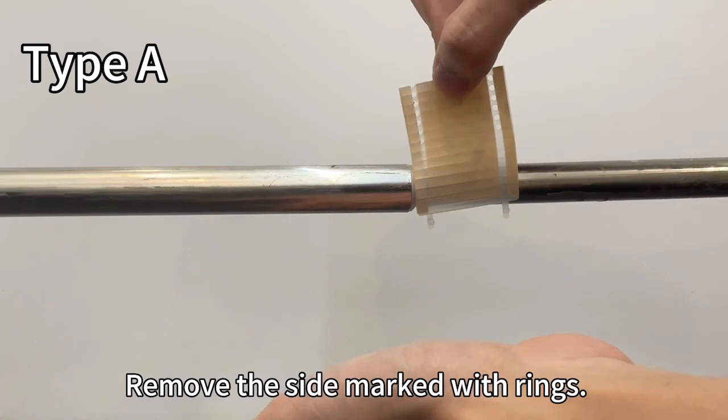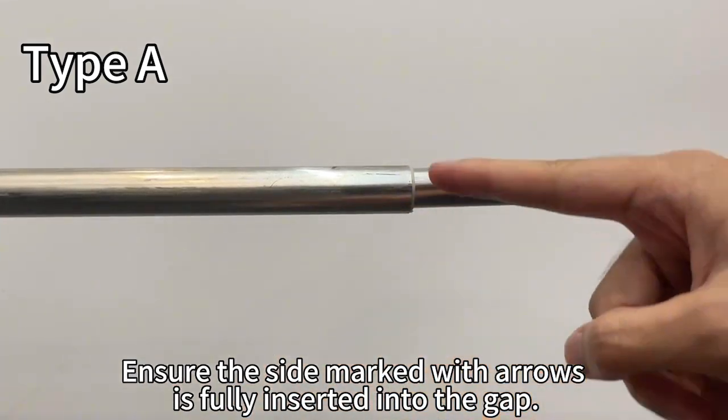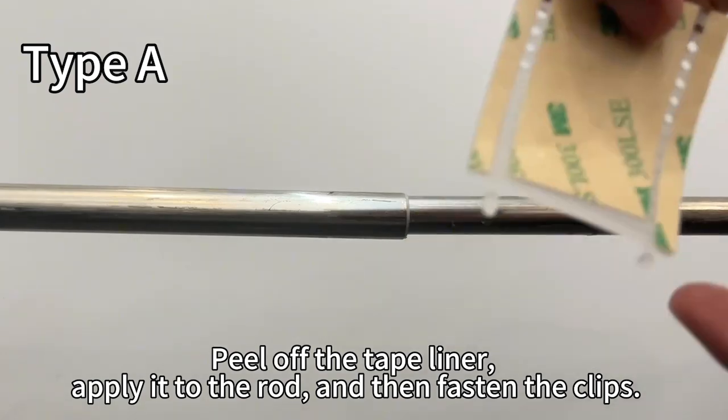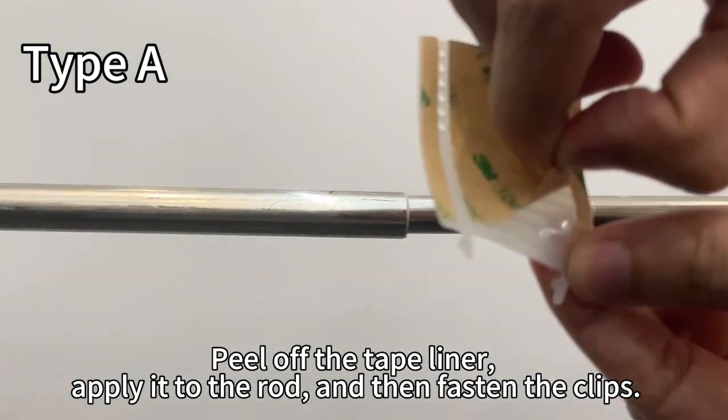Remove the side marked with rings. Ensure the side marked with arrows is fully inserted into the gap. Peel off the tape liner, apply it to the rod, and then fasten the clips.